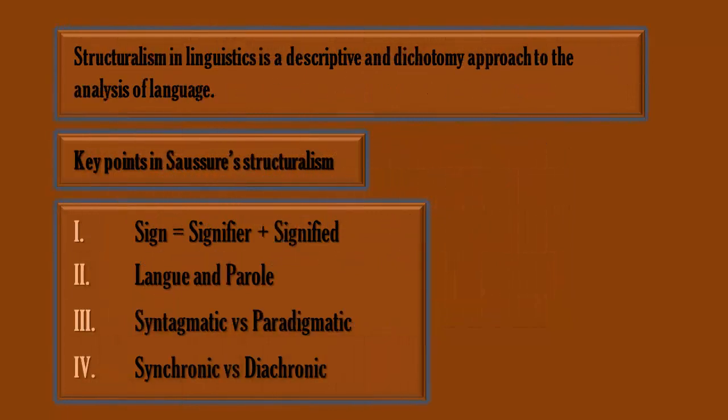Structuralism in linguistics is a descriptive and dichotomy approach to the analysis of language. The key points in linguistic structuralism are: number one, sign — which is a combination of signifier and signified.